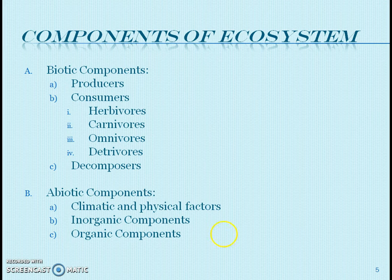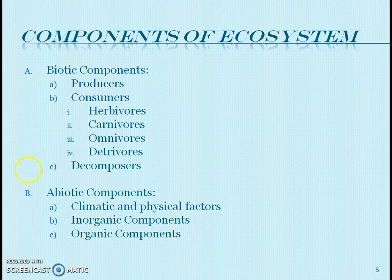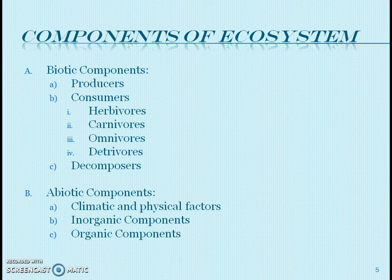The last biotic component is decomposers. Decomposers are generally microorganisms who feed on dead organisms. Next are abiotic components. In abiotic components, we can consider climatic and physical factors like temperature, pressure, and rainfall. The next component is inorganic components, in which different minerals, carbon, and nitrogen are present. The last one is organic components, where proteins and lipids are considered.